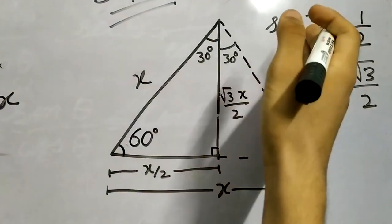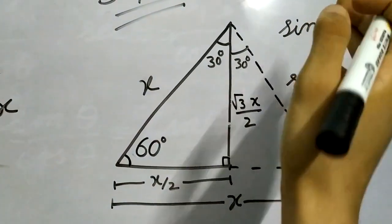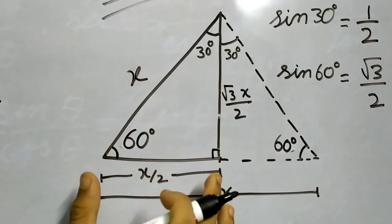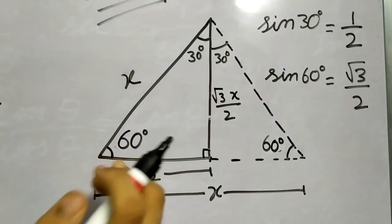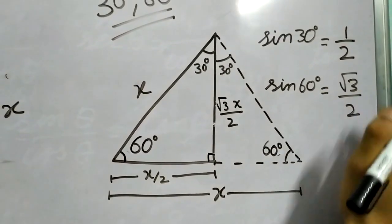And using the Pythagorean theorem we figured out that this length will be √3 x by 2. And of course then you can take sin 30 degree. So sin 30 degrees will be this length x by 2 divided by x, so it will be 1 by 2. And similarly for sin 60 degree we got the ratio as √3 by 2.